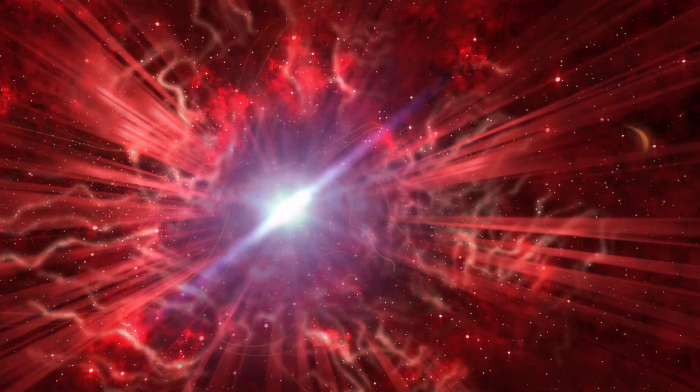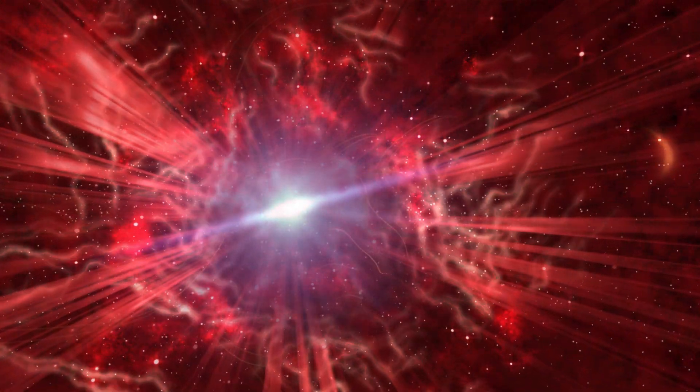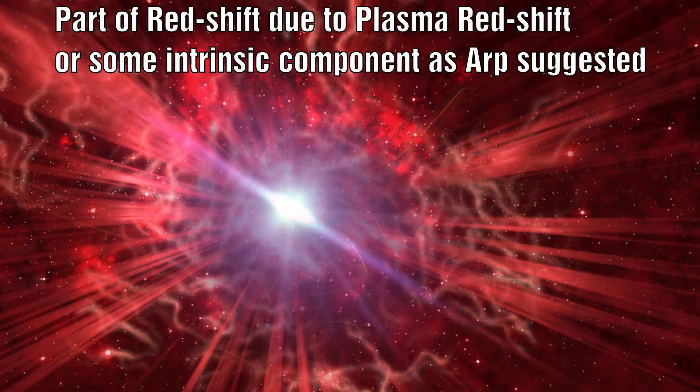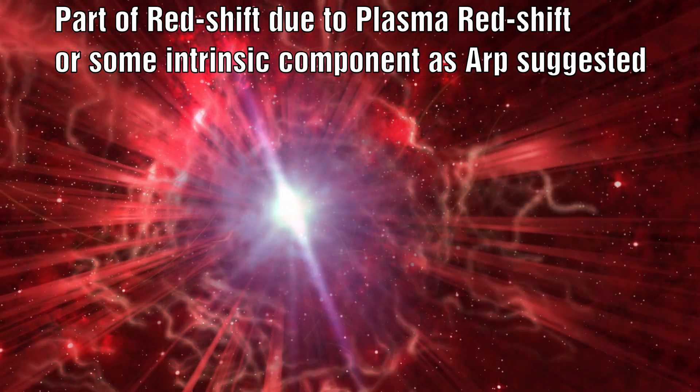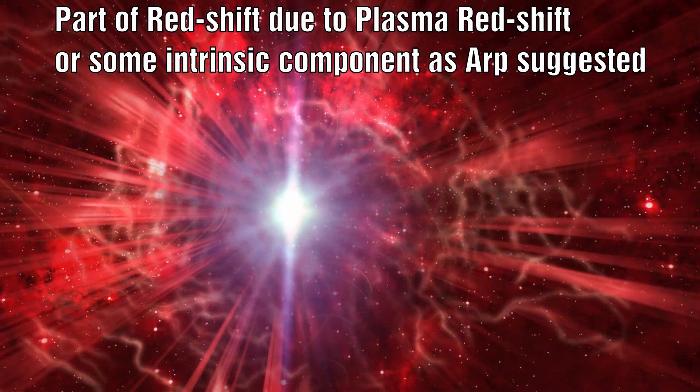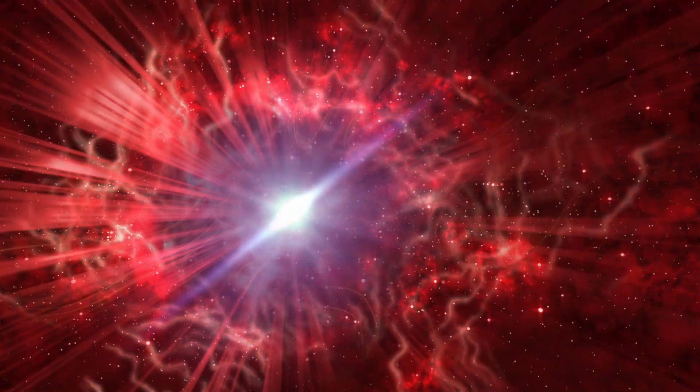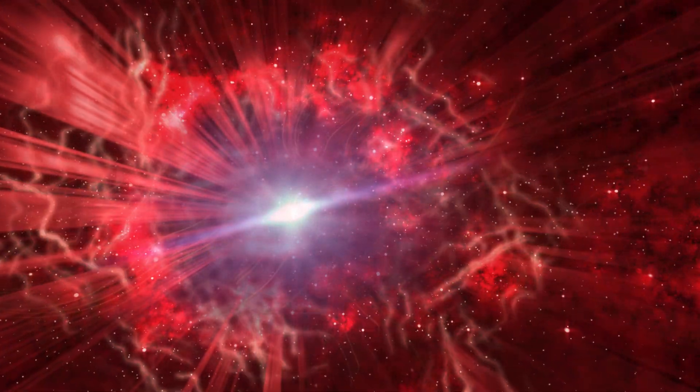What if this quasar was not as distant and part of the redshift was due to a plasma redshift due to the energetic electrons around the quasar? If this were true, then the object would be closer and therefore not as large, meaning the temperature reading would end up being lower.